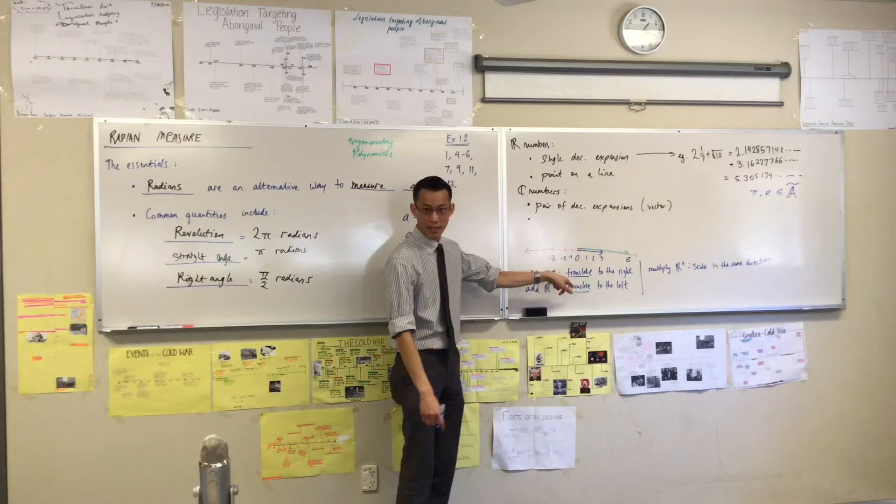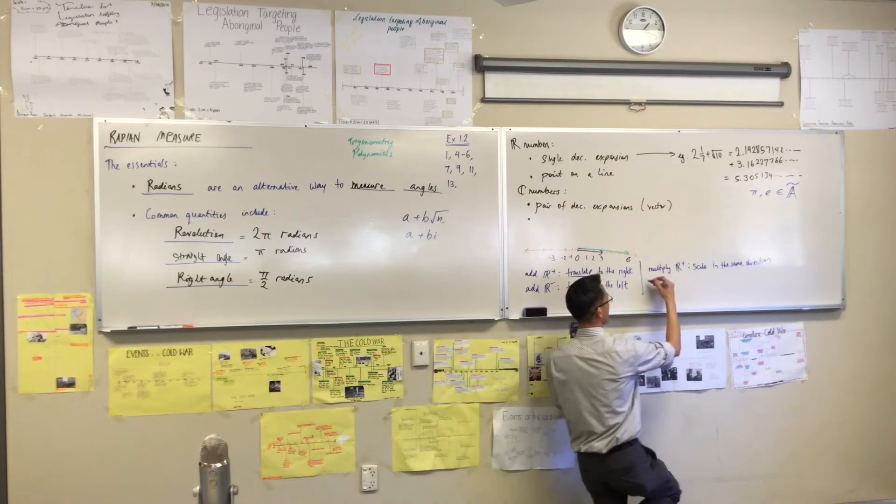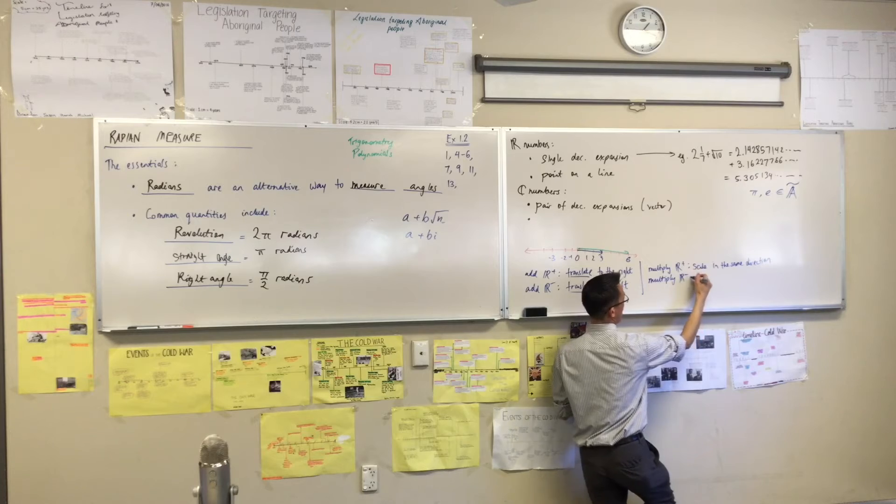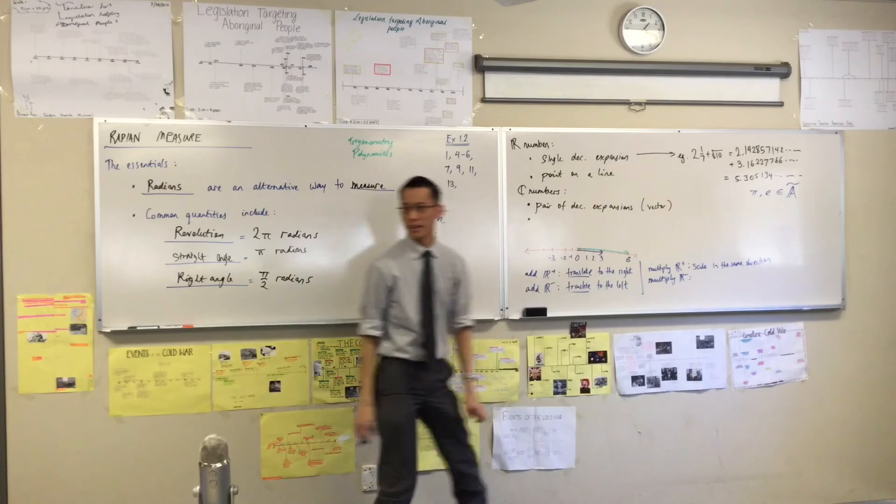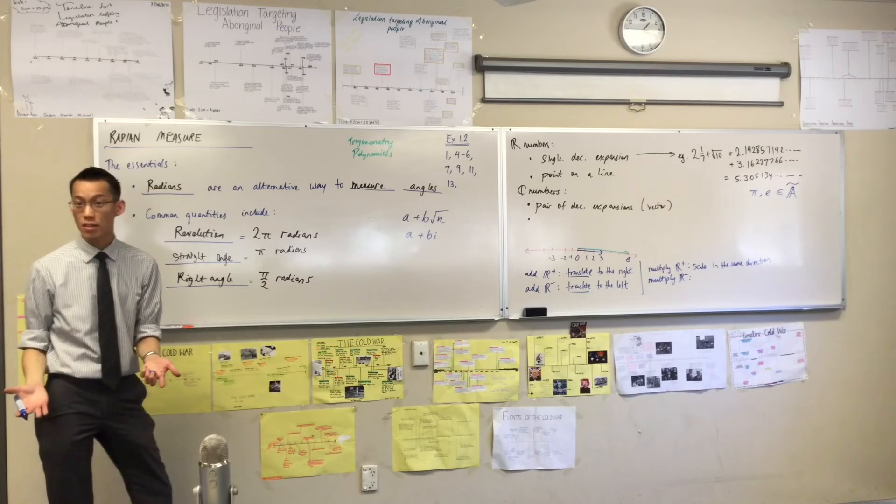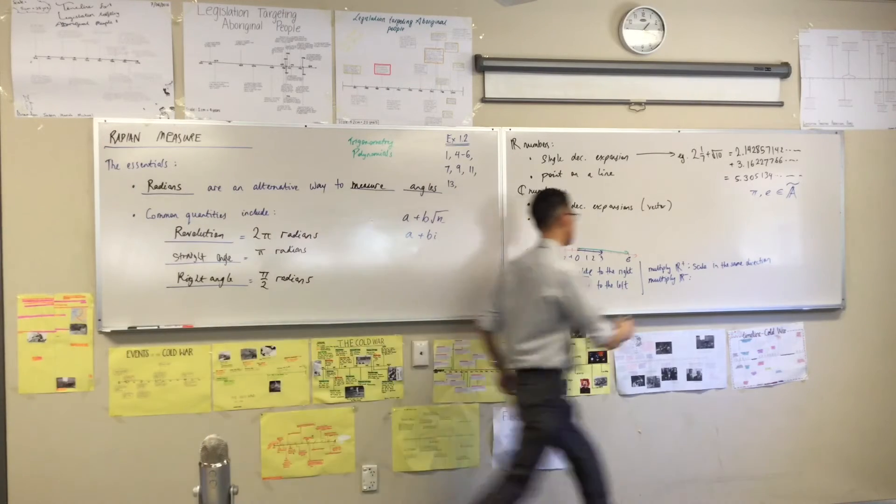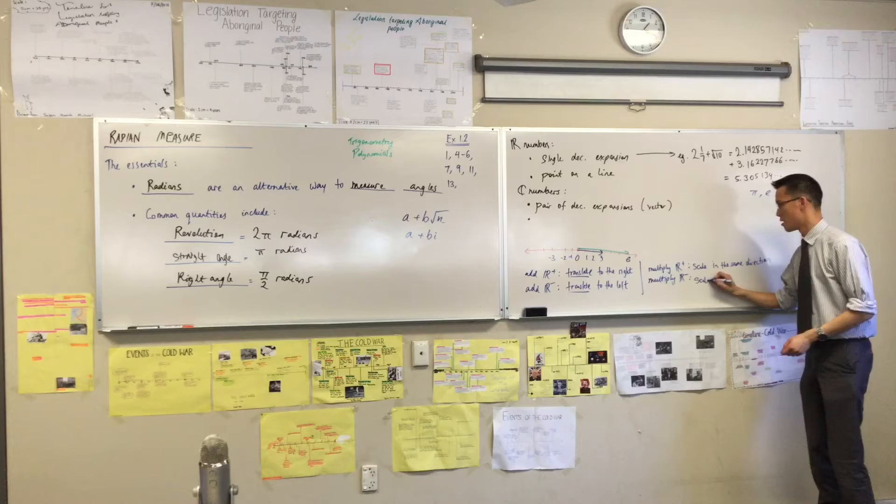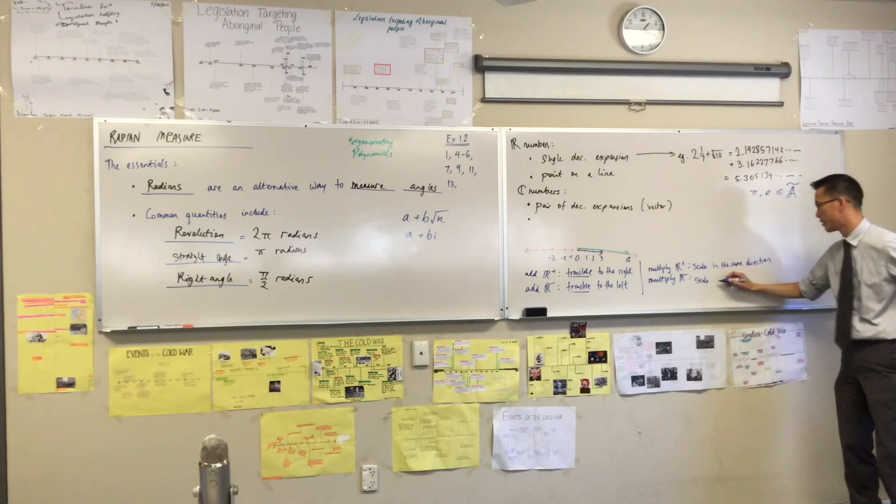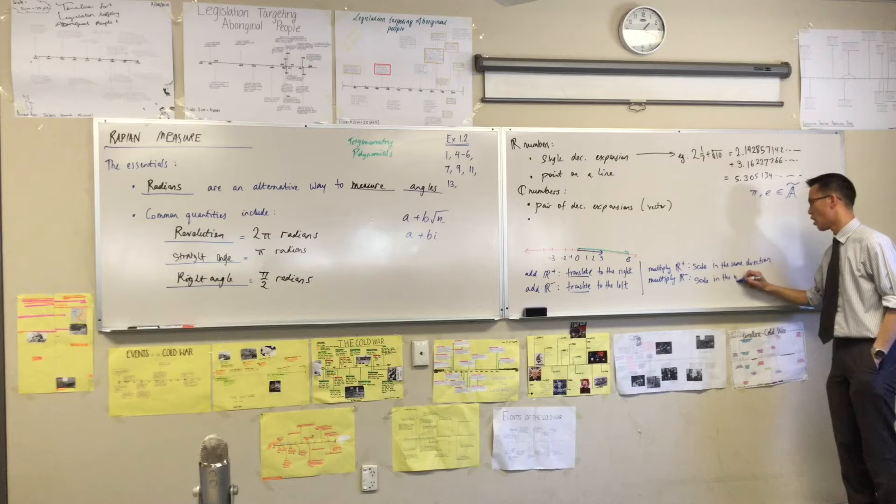Add real positive, add real negative. I'm going to multiply, come on, you've got some language now, by a real negative number. Now think. I'm going to scale again, aren't I? Because it's still multiplication. But what changes? Yeah, I'm going to flip over that way, aren't I? I'm going to scale in the opposite direction.